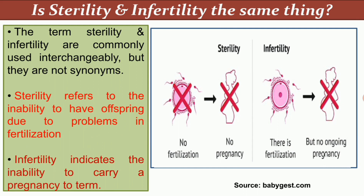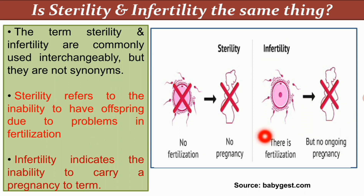As shown in this diagram: sterility means no fertilization, which means no pregnancy. In infertility, fertilization may take place normally but there will be no ongoing pregnancy. So in sterility there is no fertilization and therefore no pregnancy, whereas in infertility fertilization is present but pregnancy-related problems exist. This is the basic difference between sterility and infertility.